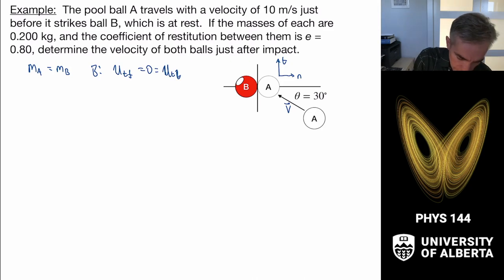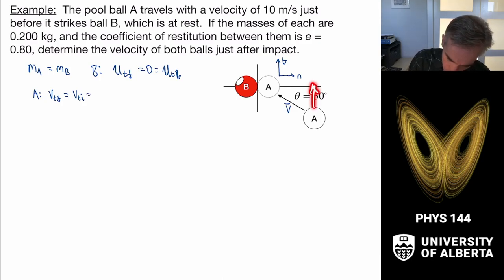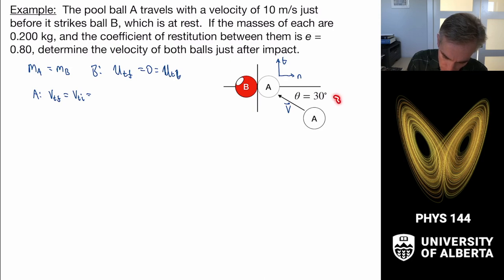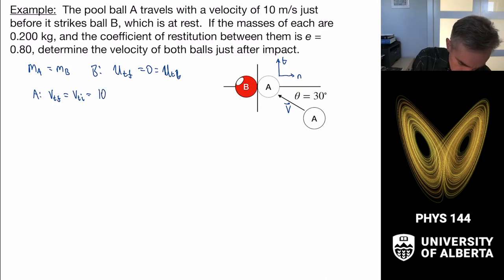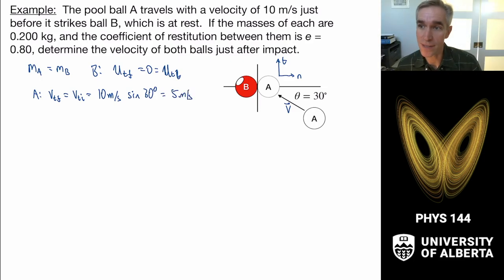For ball A, the tangential velocity v_t_final equals the initial tangential velocity of ball A. Since the angle is 30 degrees, that's the vertical component of the velocity: 10 meters per second times sine 30 degrees, which equals 5 meters per second. So we already know two of our velocity components because they simply don't change. The hard part is what happens in the normal direction.